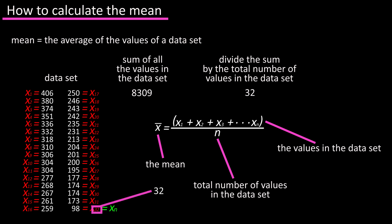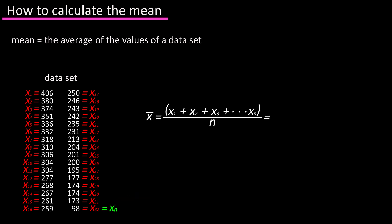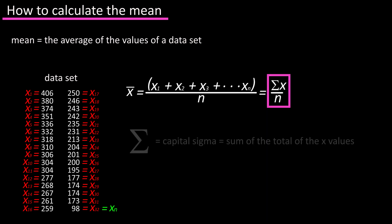So, in this data set, there are 32 values, so n equals 32. This equation is often shortened to x bar equals sigma x divided by n. Sigma is a Greek letter, and writing sigma x means the sum of the total of the x values, and is a much shorter formula to write.